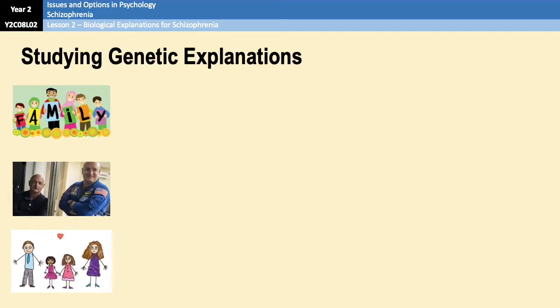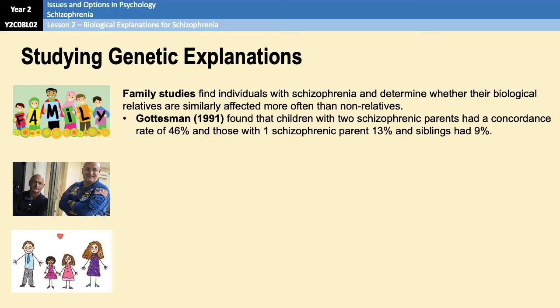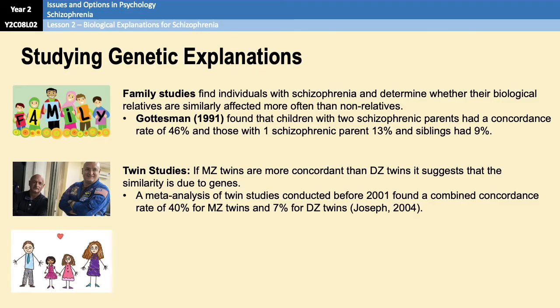Family studies find individuals with schizophrenia and determine whether their biological relatives are similarly affected more than non-relatives. Gottesman in 1991 found that schizophrenia is more common among biological relatives of the person with schizophrenia. Twin studies are used to study the relative contribution of genes and the environment, by assessing the occurrence of a condition in identical twins and comparing it to non-identical twins. If identical twins have a greater concordance rate than non-identical twins, it implies a genetic cause — and that is in fact the case in research conducted.